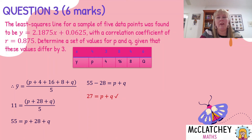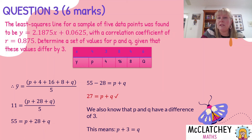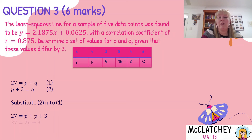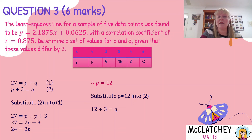Now, how do we find p and q individually? We know that p and q have a difference of 3, so p + 3 = q (alternatively q + 3 = p — the difference is 3). We now have two simultaneous equations: equation 1 is p + q = 27, and equation 2 is p + 3 = q. Substituting q = p + 3 into equation 1: 27 = p + (p + 3) = 2p + 3, so 2p = 24, giving p = 12. Substituting back: q = 12 + 3 = 15.